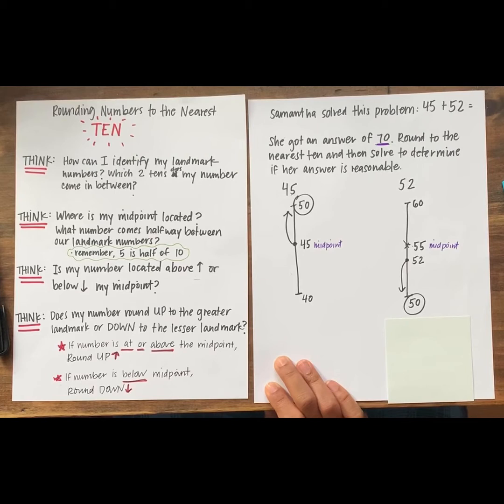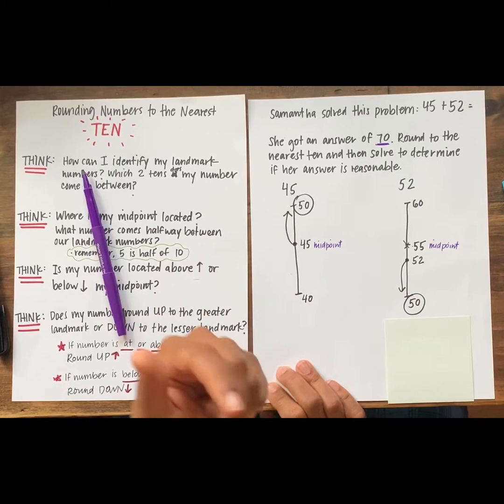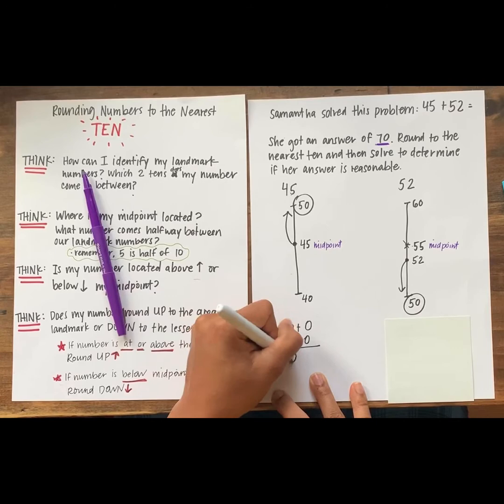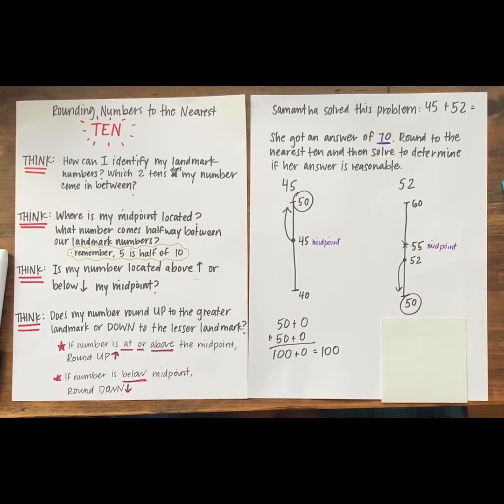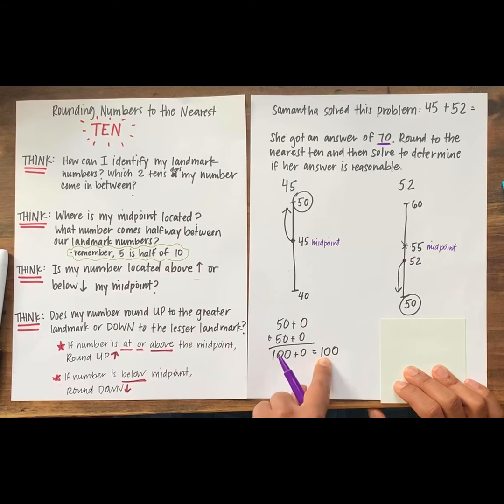What's 50 plus 50? Some of you might know in your head or some of you might count up by 10. Let's try it. 50, 60, 70, 80, 90, 100. So 50 plus 50 equals 100. Samantha got 70. Is her answer reasonable? Evaluate. That means show me yes or no. No, it is not. She got 70 and when we rounded, we got 100. 70 is way too low.